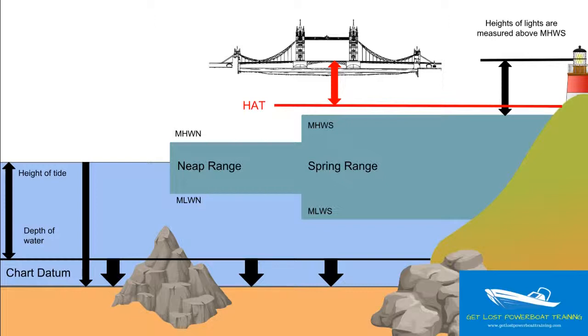Bridges are measured above something called highest astronomical tide. Opposite to chart datum, which is the lowest astronomical tide, HAT—highest astronomical tide—if all of nature aligned, is the highest the tide could ever get to.